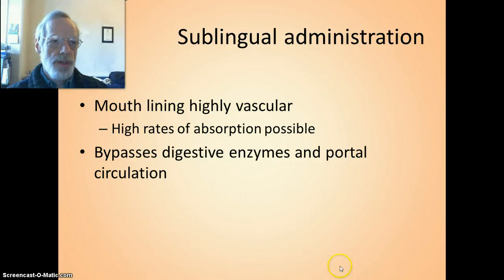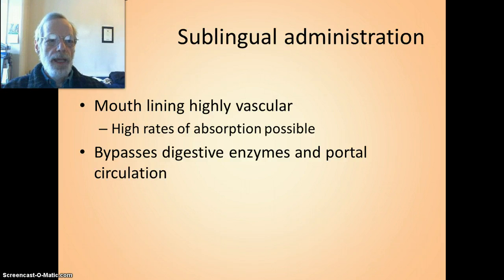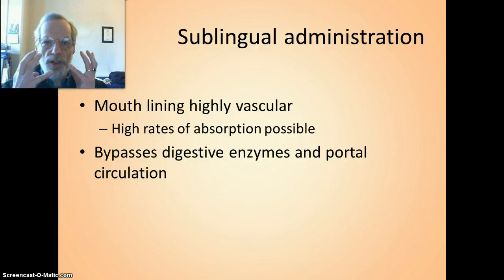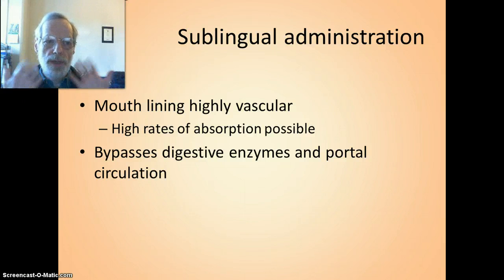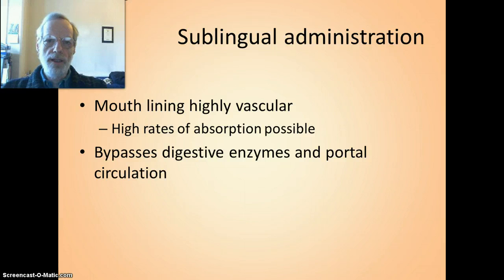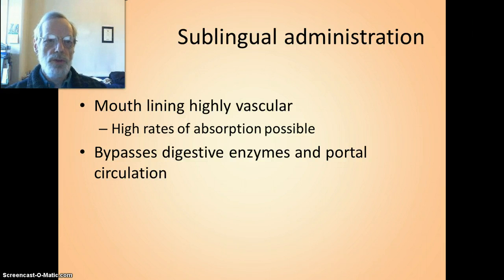Giving something under the tongue sublingually is sometimes a good strategy. The mouth lining is highly vascular, so high rates of absorption are possible. Once something crosses the mucous membrane of the mouth, it gets straight into copious capillaries and is sent to the systemic circulation — bypassing both digestive enzymes and the portal circulation. This makes it a very quick way to get certain substances into the body.